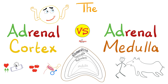As for the adrenal medulla, it is part of the autonomic nervous system, especially sympathetic — fight or flight. When you're running from a tiger, you need your adrenal medulla to secrete the catecholamines, like epinephrine, norepinephrine, and dopamine.